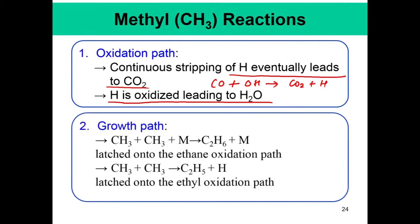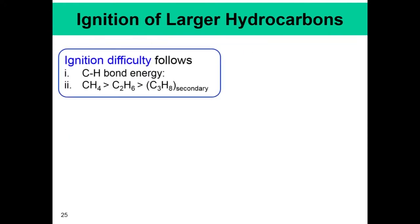There is also a growth path. CH3 plus CH3, in the presence of a third body, can form C2H6 — so from one carbon it forms two carbons. In the methane reaction mechanism, larger molecules like C2H6 are also important and this becomes part of the ethane oxidation path. CH3 plus CH3 can also form C2H5 plus H, leading to the ethyl oxidation path. As a result, hydrocarbon reaction mechanisms are very complex: on one hand there is stripping of H to form CO2 plus H, and on the other there is a growth path in which larger molecules are involved.